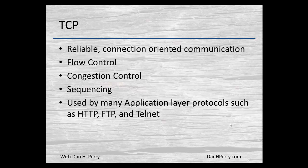Congestion control means that if there is congestion either on the network or at the receiving end, you can control and slow down your communications. TCP also provides sequencing of segments — that large chunk of data broken into smaller segments has a sequence number applied to each one, so at the other end, if they are received in a different order, they can be reassembled, and we also know if any segments are lost. TCP is used by many applications including HTTP, FTP, and Telnet.